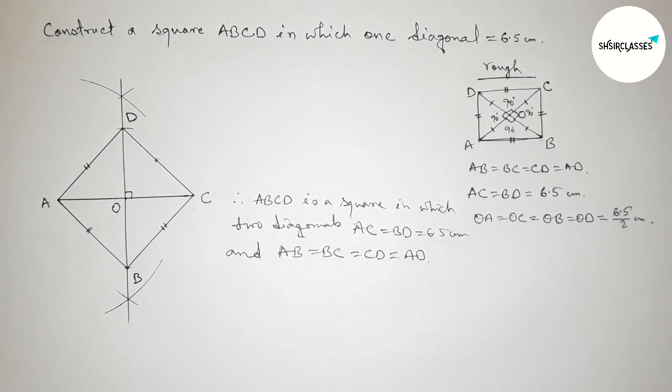And also all the sides are equal, so AB equals to BC equals to CD equals to AD. So that's all, thanks for watching. If this video is helpful to you then please share it with your friend and classmates. Thanks for watching.